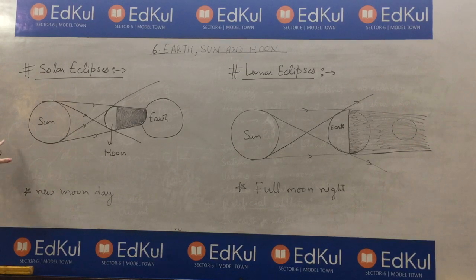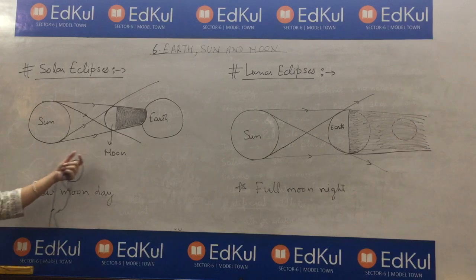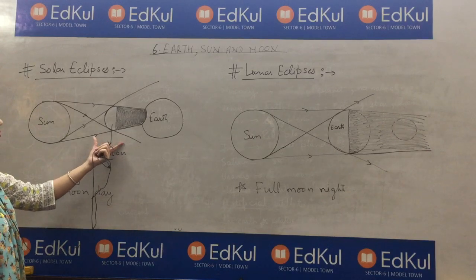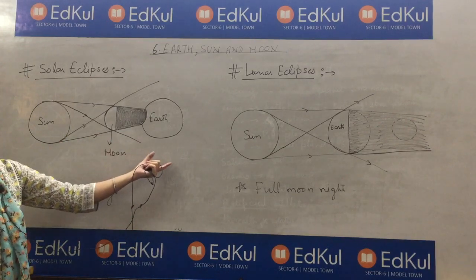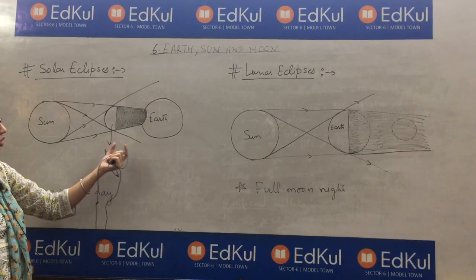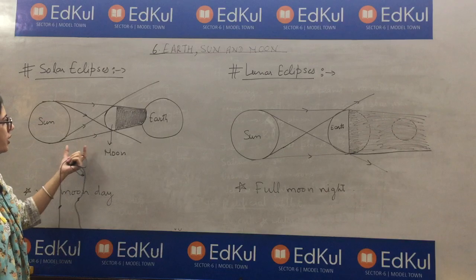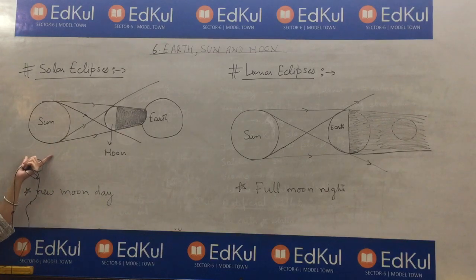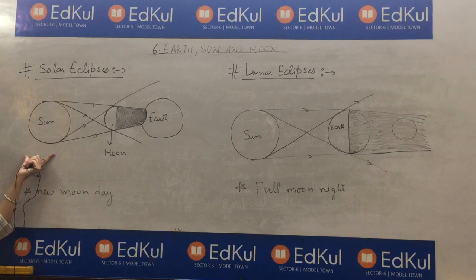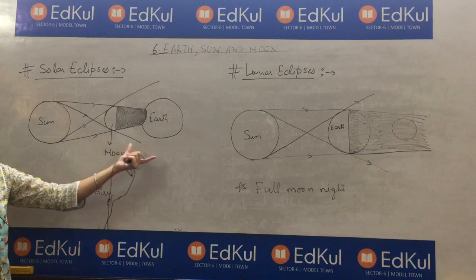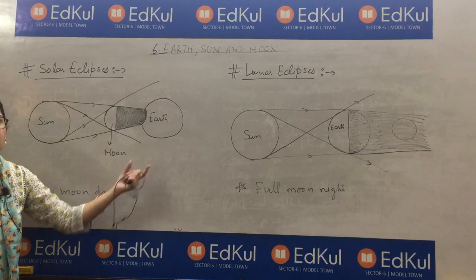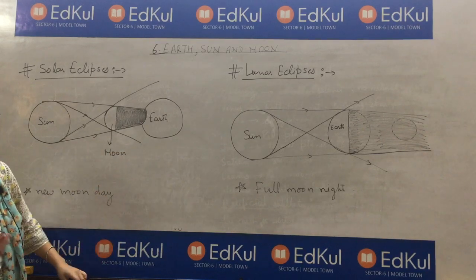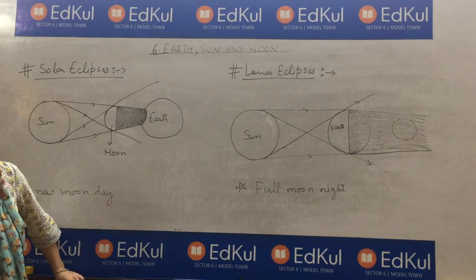So, what happens in solar eclipse? The moon comes in between earth and sun. The moon blocks the sun's rays and the sun's light, blocking its path to earth.